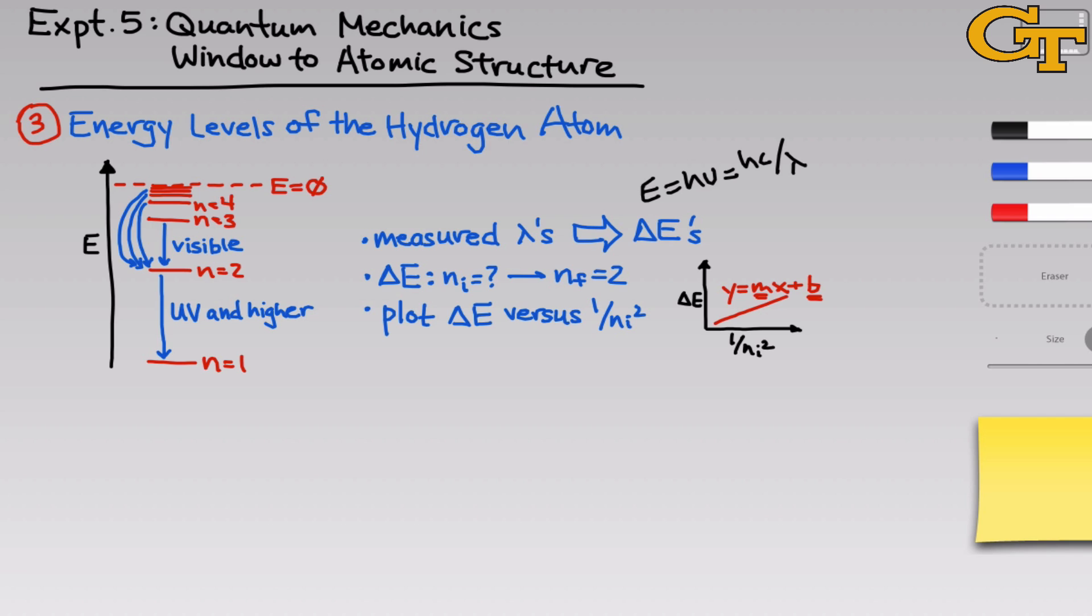And here, because of the way we've assigned the axes, y is delta E and x is 1 over n_i squared. So another way to think about this is that delta E is equal to m divided by n squared plus b. What I want you to think about before going into the laboratory is what does m represent? What are the units of m and what do you think it represents in terms of physically meaningful quantities for the hydrogen atom?